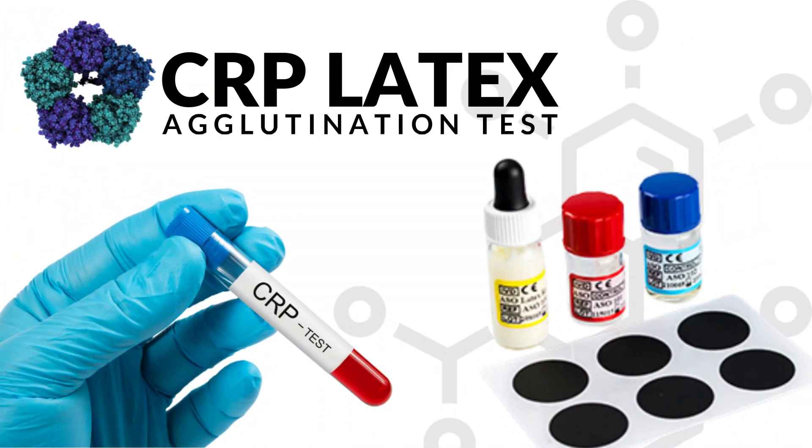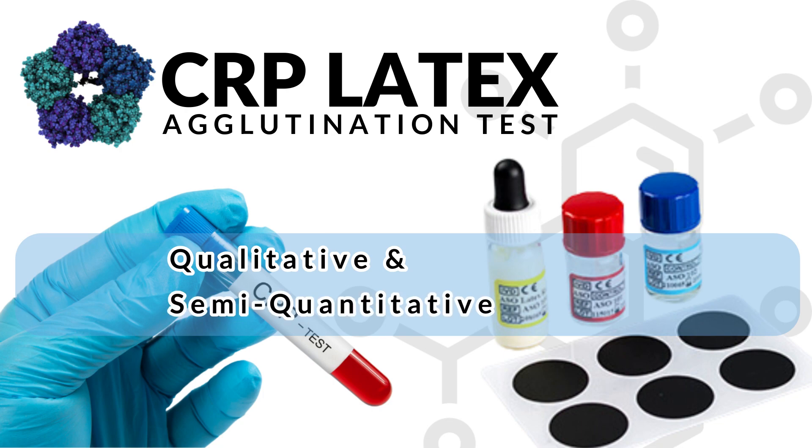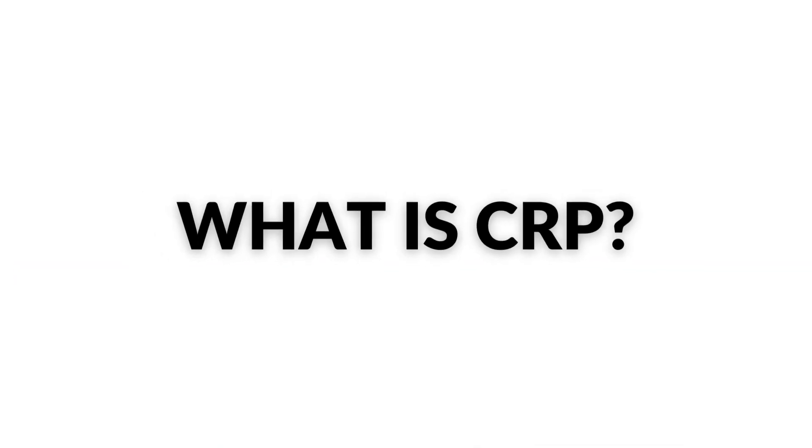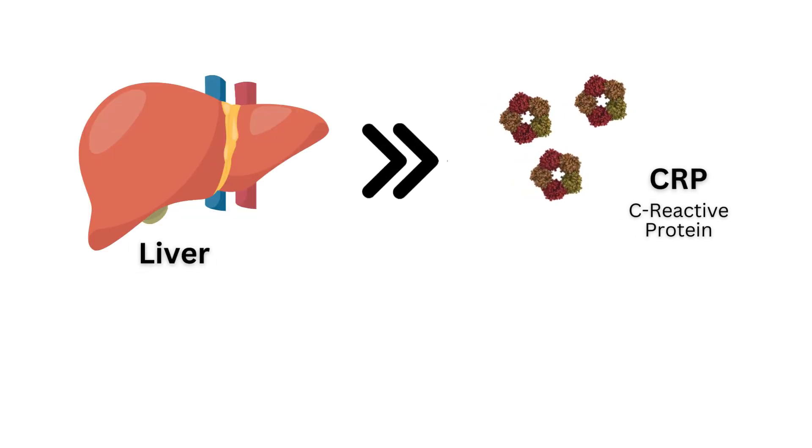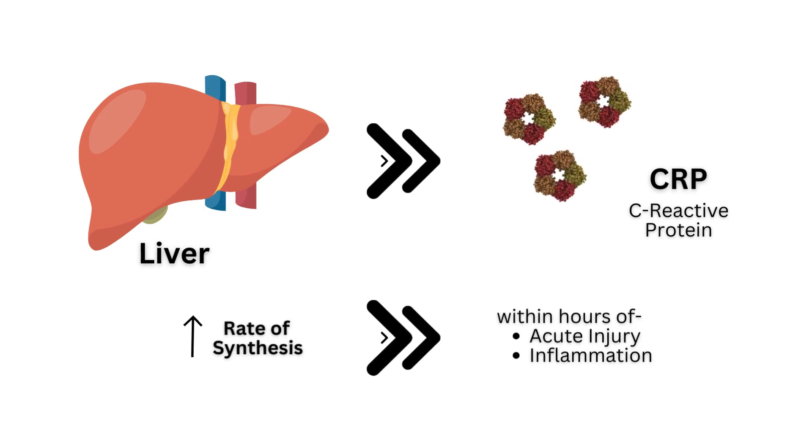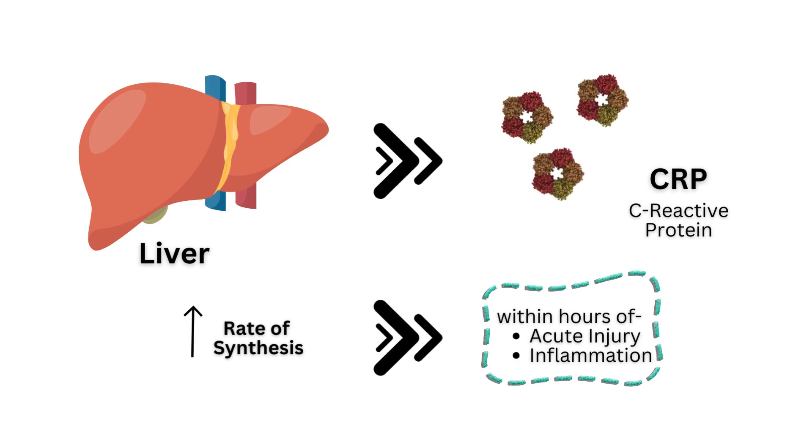The CRP latex is a slide agglutination test for the qualitative and semi-quantitative detection of C-reactive protein in human serum. C-reactive protein or CRP is a serum protein which is synthesized in the liver. Its rate of synthesis and secretion increases within hours of an acute injury or the onset of inflammation.